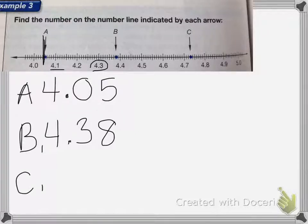And then C is going to be 4.7, okay? And then my hundredths is going to be 1, 2, 3. So it's going to be 4.73 for C.